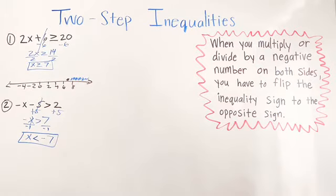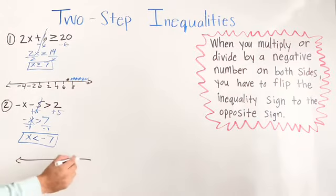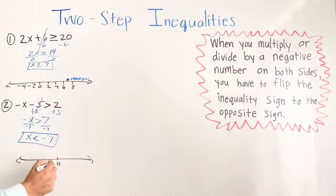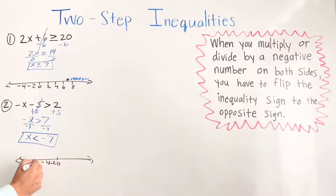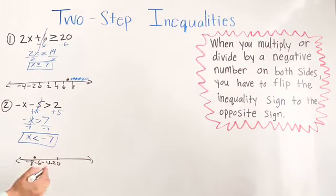You can go ahead and graph it if your teacher tells you to. Start with 0, negative 2, negative 4, negative 6, negative 8. So negative 7 is around here.